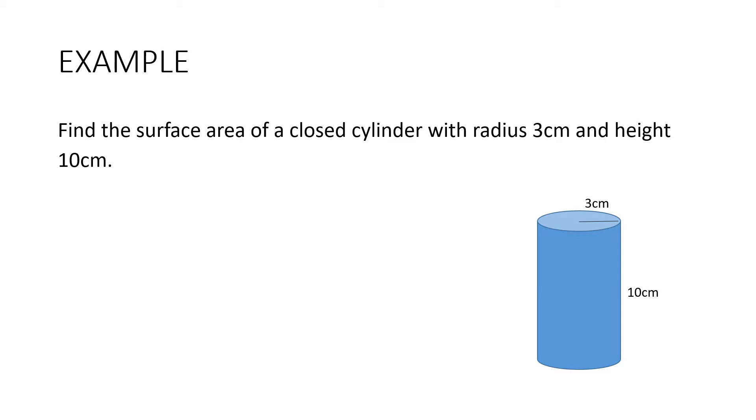Here's an example. Find the surface area of a closed cylinder with radius 3cm and height 10cm. Now closed just means that it's got both ends on, so we're going to include both of those circles. Here's the formula. R is 3 and h is 10, and we just substitute in. We just put it straight into the calculator and we get 245cm².